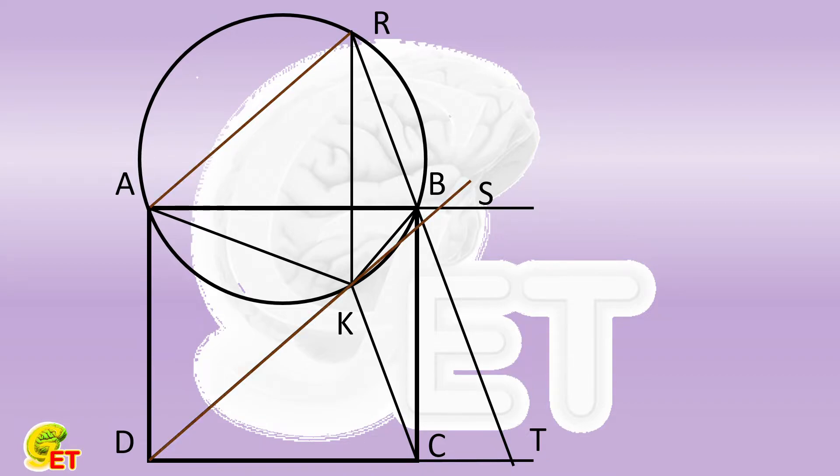Since AR is parallel to DS, angle RAB is equal to angle ASD. For the same reason, the angle ASD is equal to angle SDC. So angle RAB is equal to angle SDC.